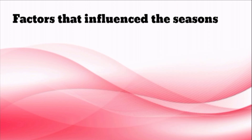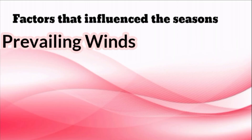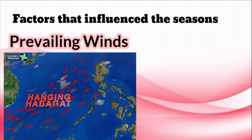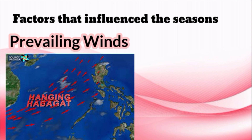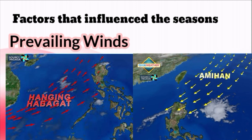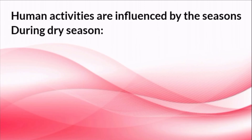Another factor that affects the seasons is the prevailing winds — winds that blow in one particular direction. The two prevailing winds are the southwest monsoon, known as the hanging habagat, which brings the rainy season, and the northeast monsoon, or hanging amihan, which causes the dry season.